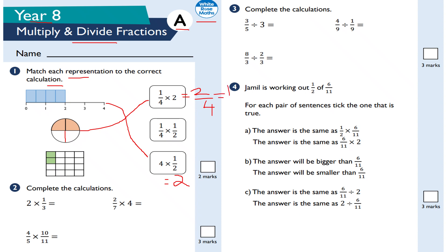The next part: I've got 2 out of 16. So 2 sixteenths simplifies to 1 eighth. 1 quarter times a half is equal to 1 eighth — 1 times 1 is equal to 1, and 4 times 2 is equal to 8, so the answer is 1 eighth.